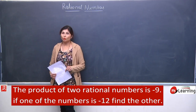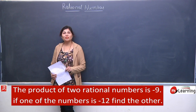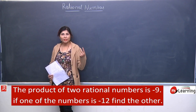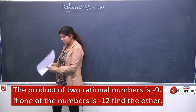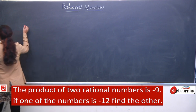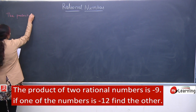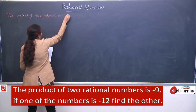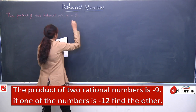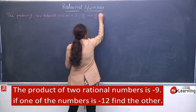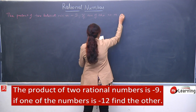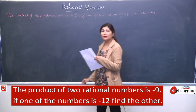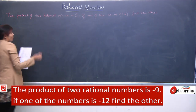Dosto, hum ne addition and subtraction dono ke question liye hain. Toh hum product aur division ko kaise bhool sakte hain? Because 4 basic operations hote hain — plus, minus, multiplication and division. Rational numbers ki hum ne 2 operations padh li hain — kaise add karenge, kaise subtract karenge. Now we will take product and division. My next question is: the product of 2 rational numbers is minus 9. If one of the numbers is minus 12, find the other.